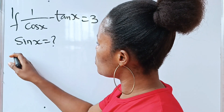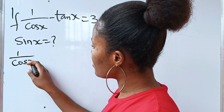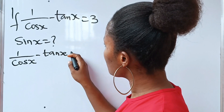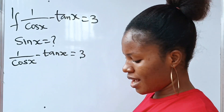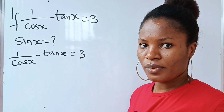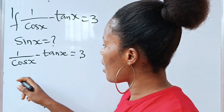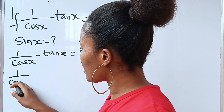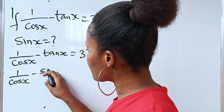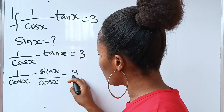The first thing we need to do here is write the equation. The equation says that 1 over cos x minus tan x is equal to 3. There is no sine x here, so we actually need to introduce sine x. To do that, tan x is sine x over cos x. So we have 1 over cos x minus sine x divided by cos x is equal to 3.